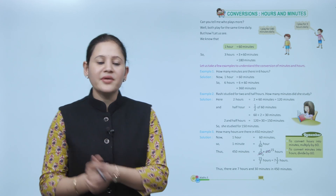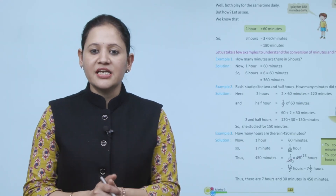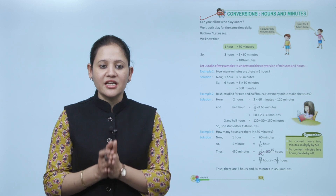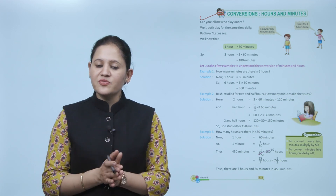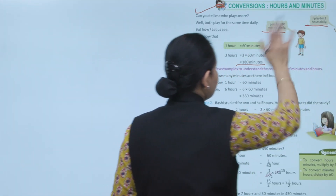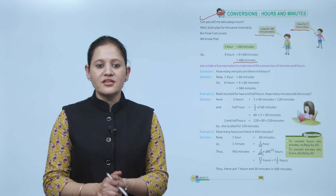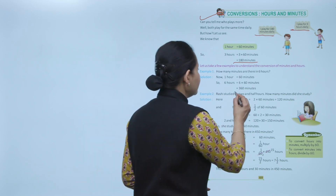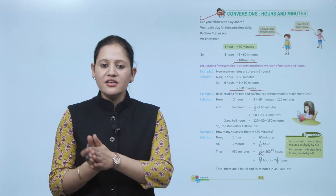Next is Conversion of Hours and Minutes. One boy says he plays for 180 minutes daily; another says he plays for 3 hours daily. Both play for the same time. We know 1 hour equals 60 minutes, so 3 hours equals 3 × 60 = 180 minutes. Example: how many minutes are in 6 hours? 6 × 60 = 360 minutes.